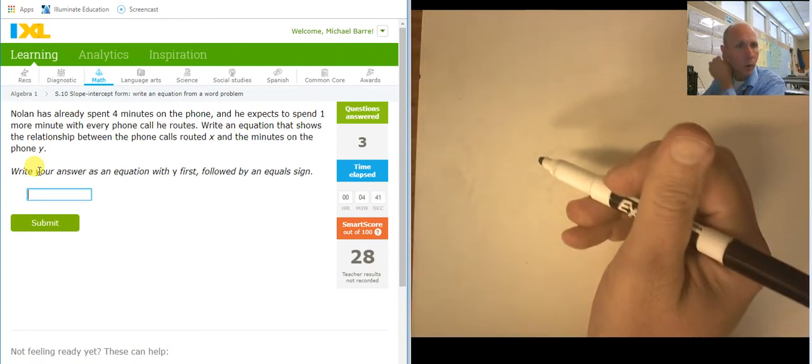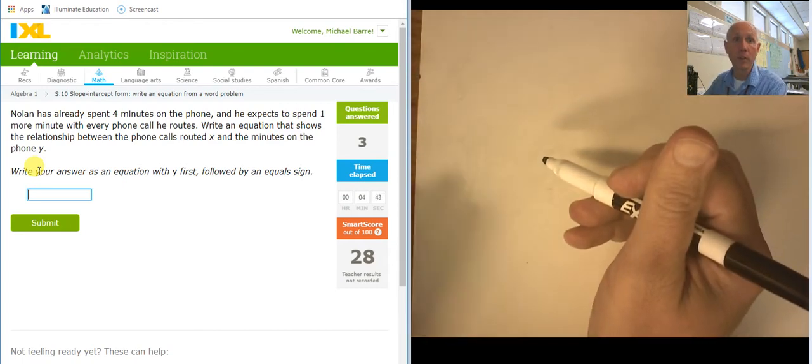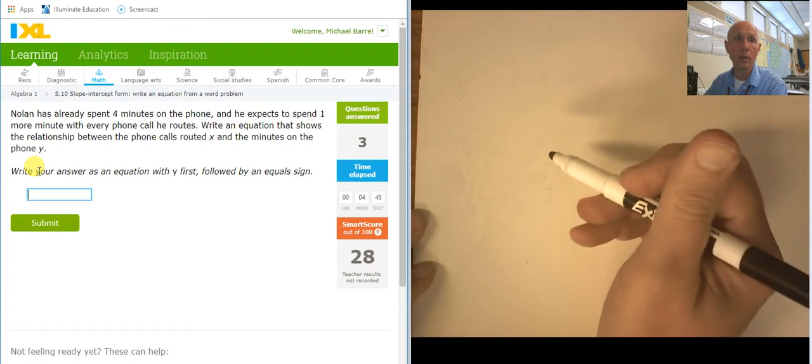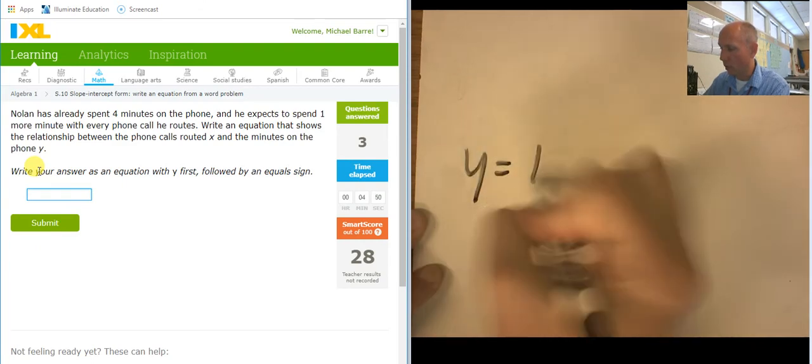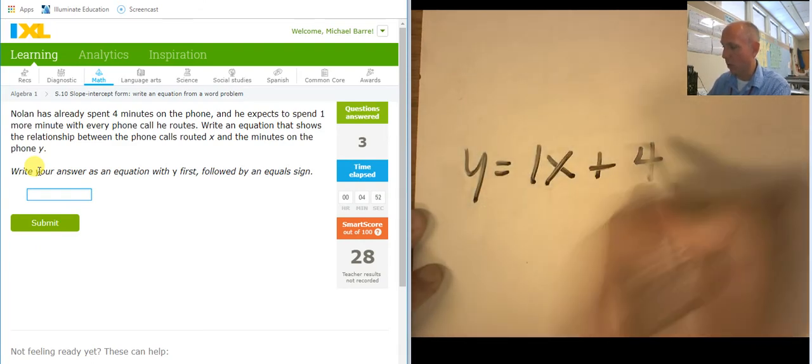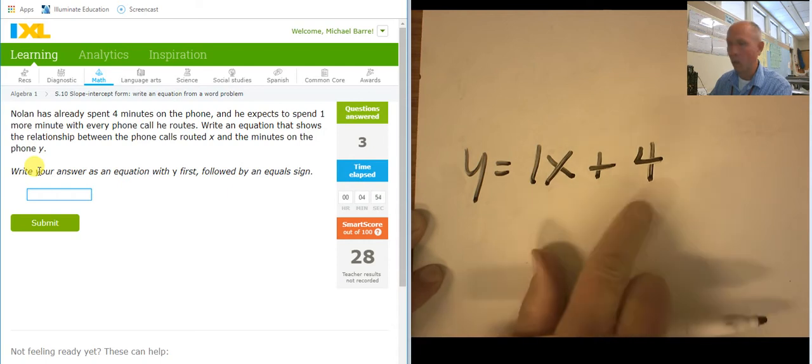Nolan has already spent four minutes on the phone, and he's going to do one minute more for every phone call he routes. So, I'm looking at y equals 1x plus 4. Okay.